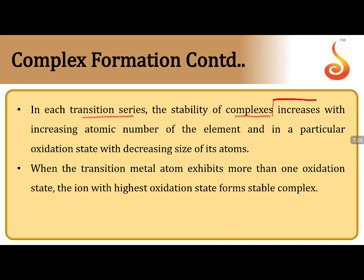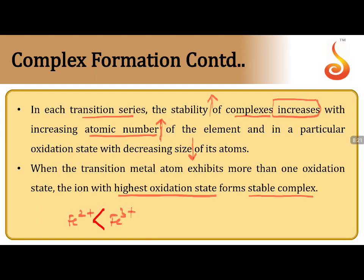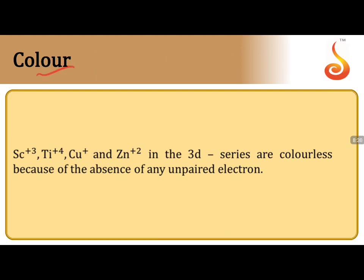In each transition series, the stability of complexes increases with increasing atomic number and decreasing size of atoms. When two metal ions are in the same oxidation state, the one with smaller size forms a more stable complex. If they have different oxidation states, the one with the higher oxidation state forms the more stable complex. For example, Fe³⁺ forms a more stable complex than Fe²⁺.